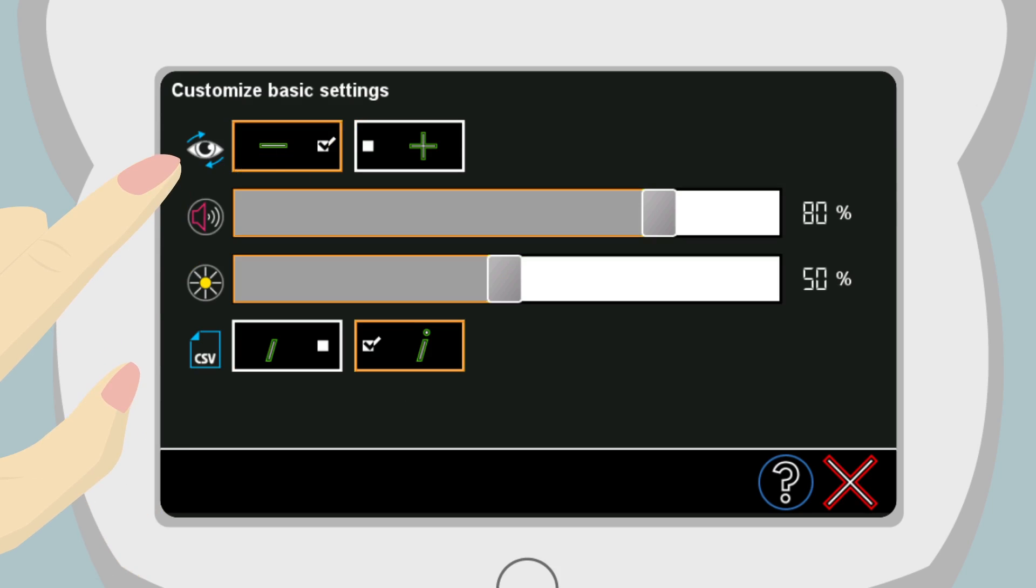The top line is the cylinder value. Usually this is left on the minus sign. Next is the volume of the warble sound, followed by the brightness of the screen adjustment. The last selection is the separator for data import and export.